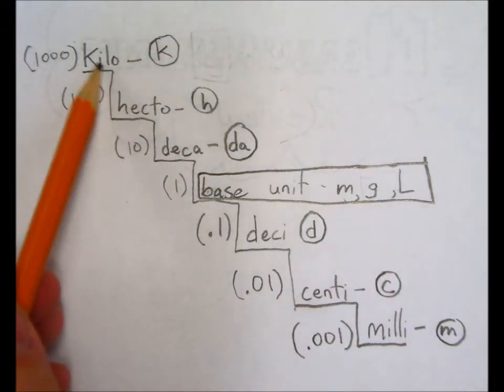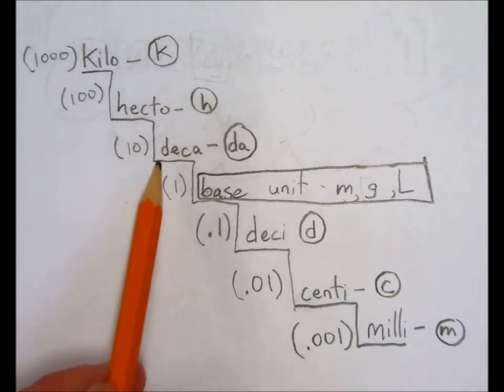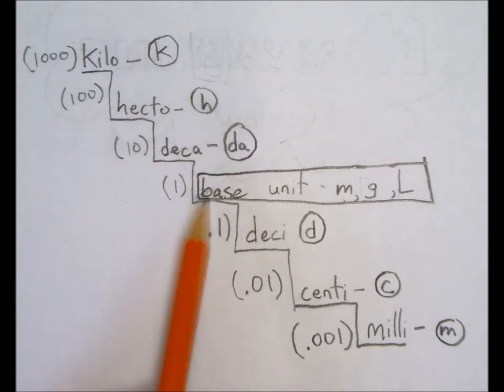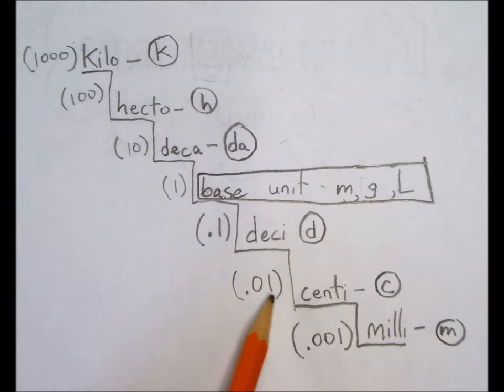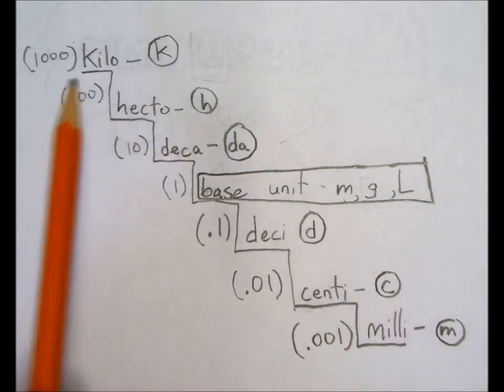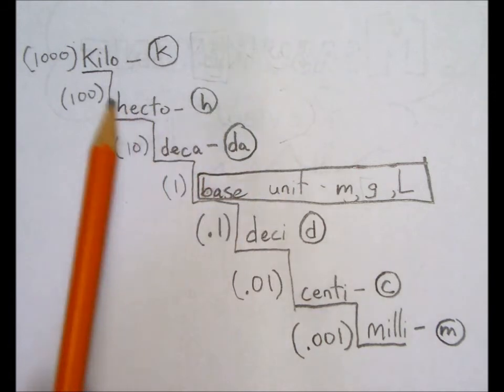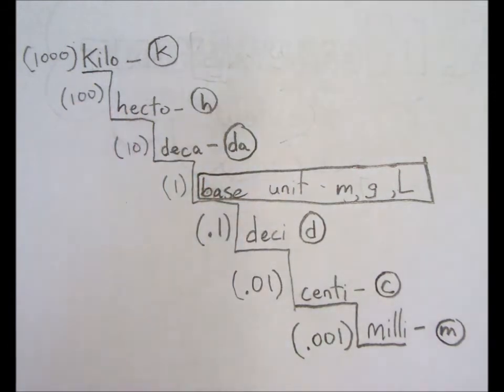So, kilo is 1000, hecto is 100, deca is 10, our base unit is just 1, deci is 1/10th, centi is 1/100th, and milli is 1/1000th. It takes 1000 millimeters to make 1 meter. It takes 1000 meters to make 1 kilometer.